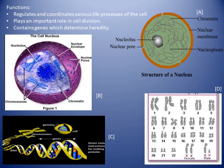The nuclear membrane has nuclear pores through which materials come in and go out. The nucleoplasm contains thread-like structures called chromatin fibers when the cell is not dividing; these condense to form chromosomes during cell division. Cells in which the nuclear membrane is absent are called prokaryotic cells — they have primitive nuclei. In eukaryotic cells, the chromatin material is bounded by a nuclear membrane.